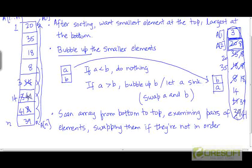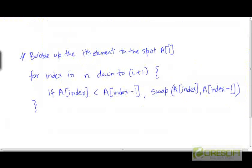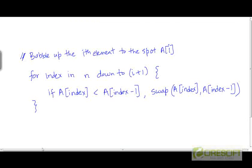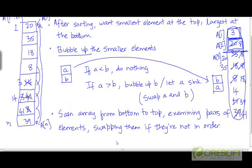In the third scan, we apply the same procedure and halt when we reach a[3]. After the third scan, the third smallest element is bubbled up to that position. In general, we keep repeating this scan from bottom to top, and every time we do this scan, the next smallest element rises up to its appropriate location in the array.